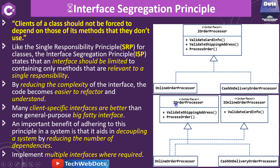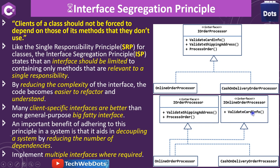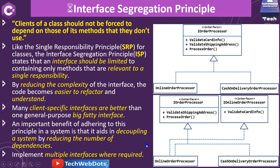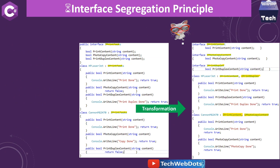We should implement multiple interfaces where required. In this case, we split the original interface into two parts: IOrderProcessor, which contains ValidateShippingAddress and ProcessOrder — applicable to both online and cash on delivery — and IOnlineOrderProcessor, which contains ValidateCardInfo and is implemented only for online order processing.